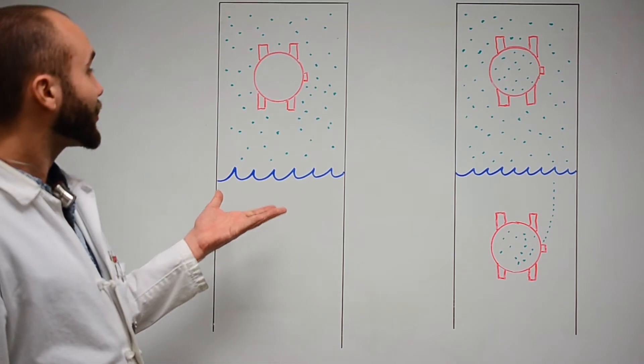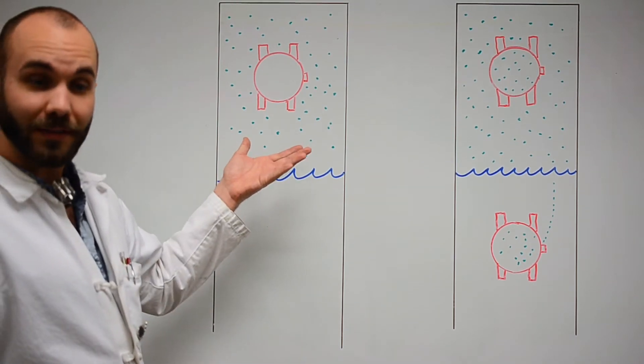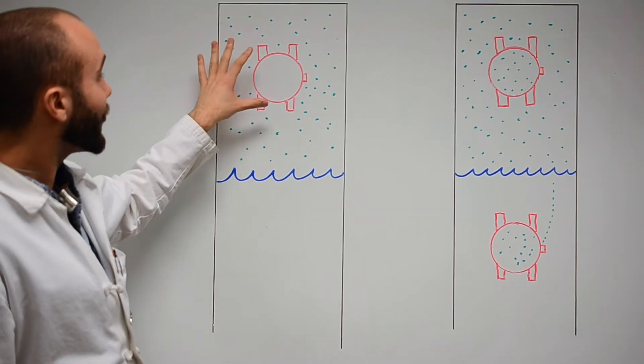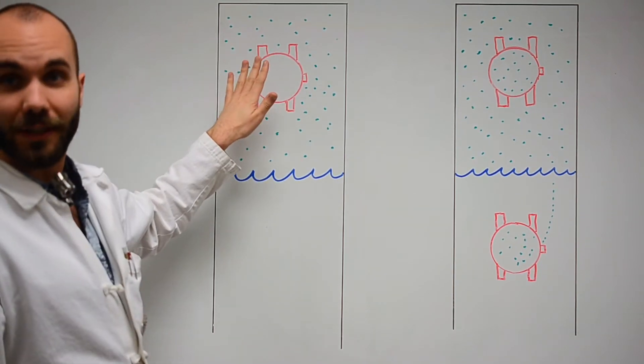This diagram represents a watch case that is not compromised. The green dots are high pressure. You can see that the green dots are not within the watch case.